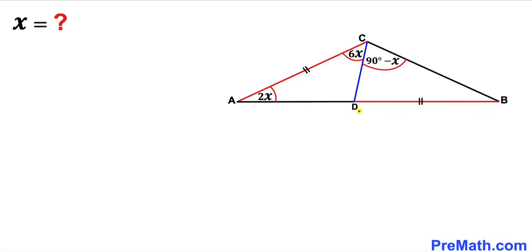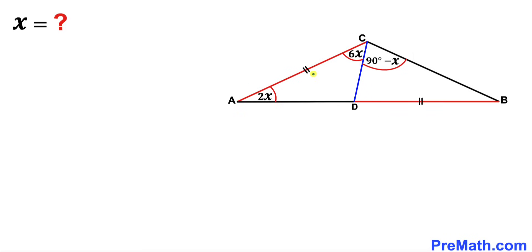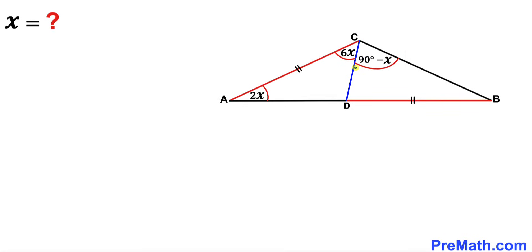Welcome to pre-math. In this video we have triangle ABC such that line segment CD dissects this triangle in such a way that line segment AC is equal to side length BD. Furthermore, angle CAB is 2x, angle ACD is 6x, and angle BCD is 90 degrees minus x. Our task is to find the value of x.